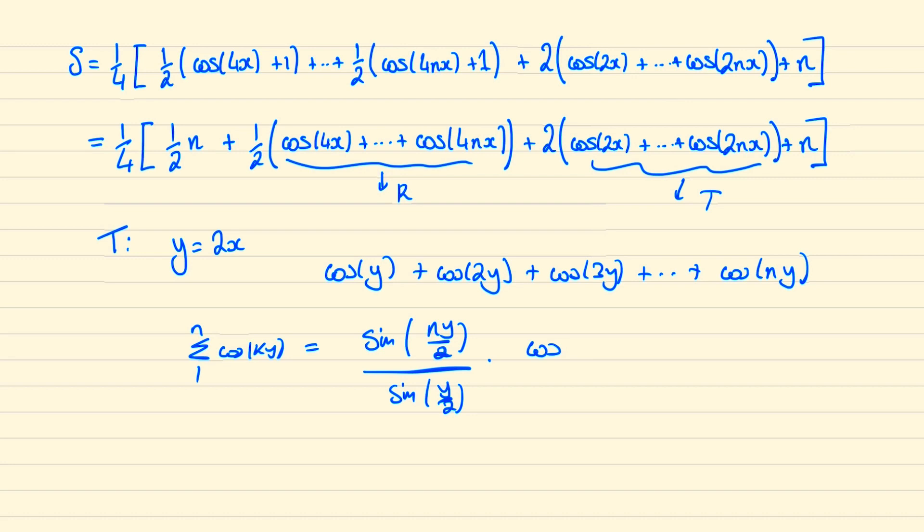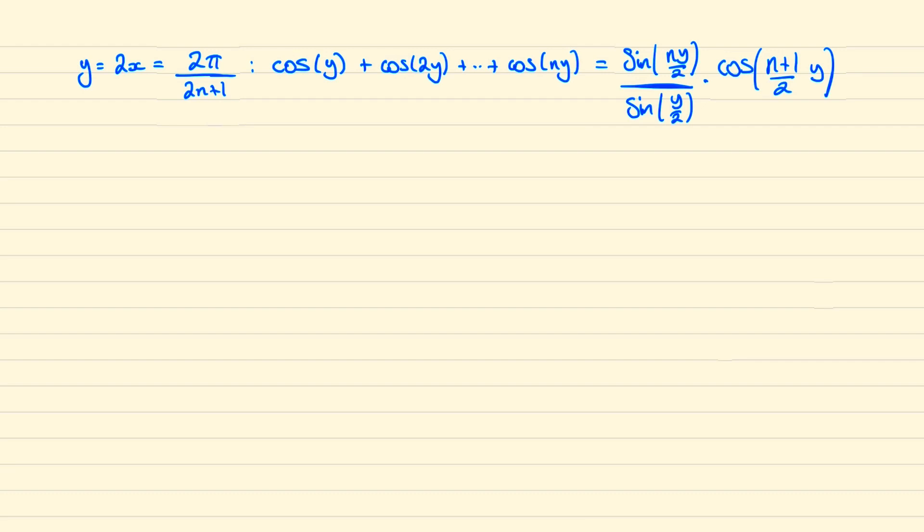If you haven't seen this result before, then don't worry, I will link a video in which you can see me prove this. But for now, for the purpose of this proof, we'll just accept it to be true and move on. Now at the moment there isn't much we can do since we have this sine ny over 2 and this cos n plus 1 over 2y.